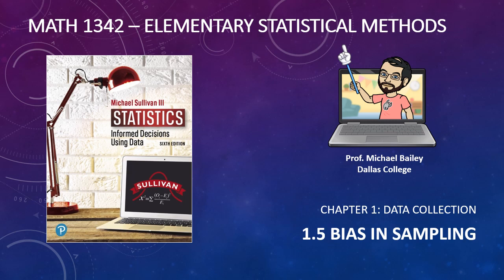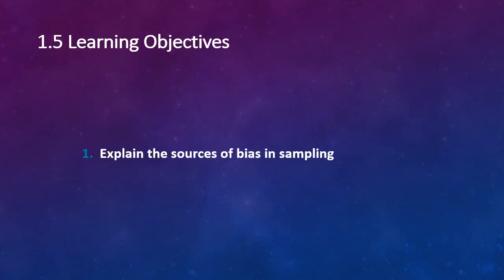Welcome to our next lecture in statistics at Dallas College. We are finishing up chapter one with 1.5 bias sampling. Here we're going to look at the sources of bias in sampling and how they differ.